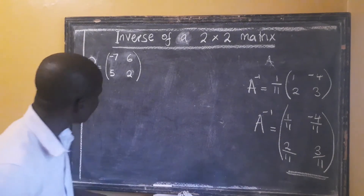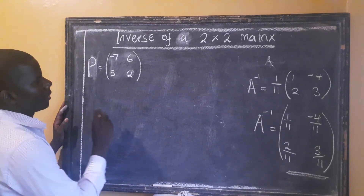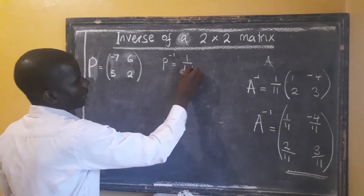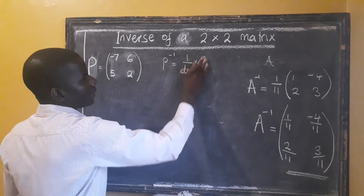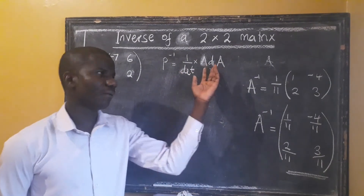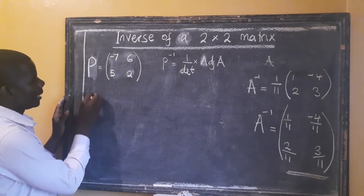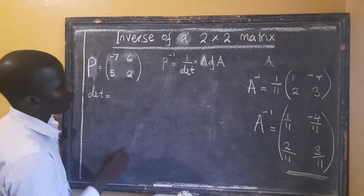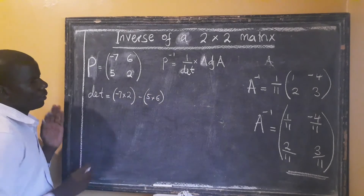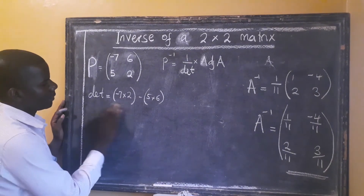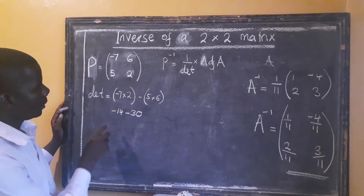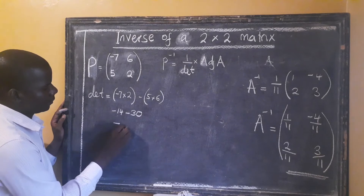How do we find the inverse for this one? Remember our formula: the inverse of P equals 1 over the determinant multiplied by the adjoint of the matrix A. So we have to find the determinant and the adjoint. To find the determinant of this matrix, we multiply negative 7 by 2, minus 5 multiplied by 6. When we multiply, we get negative 14 minus 30, which gives us negative 44.